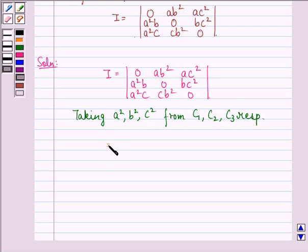we get a²b²c² times the determinant: 0, a, a, b, 0, b, c, c, 0.